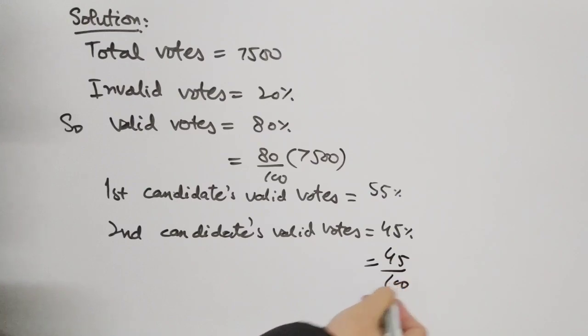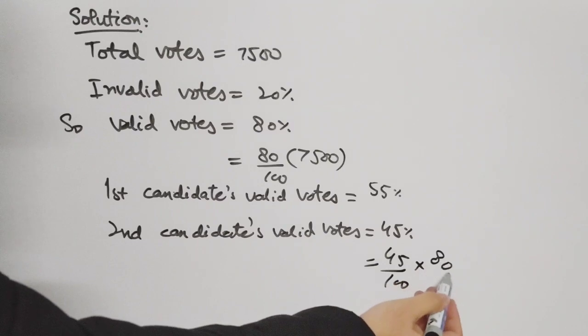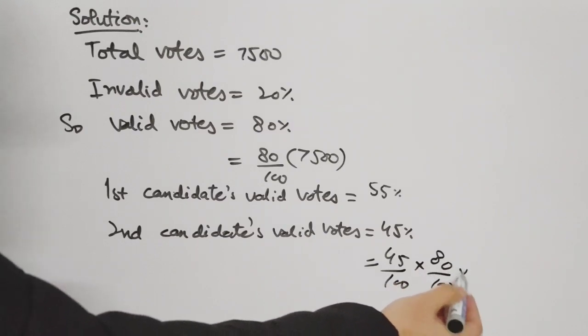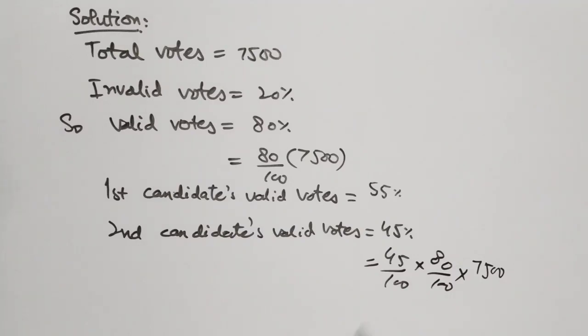So 45 divided by 100 multiplied by 80 divided by 100 multiplied by 7,500. We will simplify this, cancel these two zeros with these two zeros and this zero with this. We will simplify this and we will get 2700.